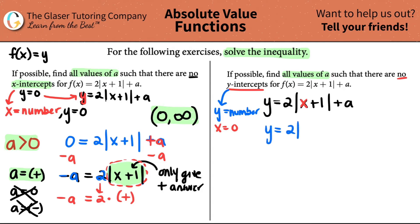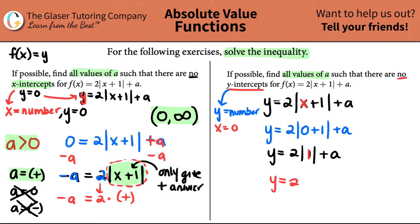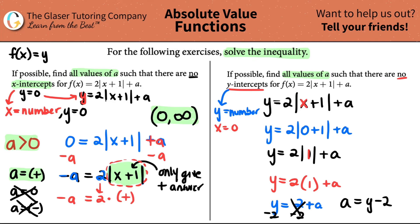So y equals 2 times the absolute value of 0 plus 1, plus a. That gives y equals 2 times the absolute value of 1 plus a. Absolute value always gives a positive answer, so it's just 1 plus a. Then y equals 2 plus a. And if we want to solve for a, we subtract 2 from both sides, and we get a equals y minus 2.